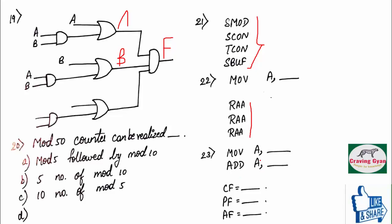Twenty-third question was based on microcontroller, 8051. They have given MUA, some value. Next expression was add A, some value.